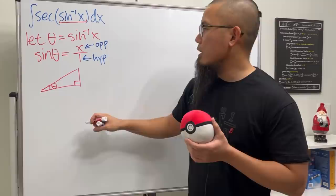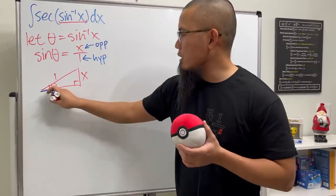Let's just go ahead and draw a right triangle, put down the right angle here and then the theta here. The opposite will be here and the hypotenuse will be here, and the adjacent is just going to be the square root of the hypotenuse squared minus the other side squared.